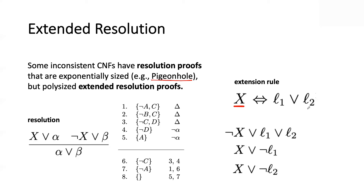Extended resolution is very simple conceptually. You pick two literals from the CNF, L1 and L2, and you make the notion of L1 or L2 equivalent to a new variable X. People have shown that for some problems with exponential proofs, if you add clauses like this — where X is a new variable not appearing in the CNF — and carefully choose L1 and L2, you can do a resolution proof that is polynomial instead of exponential. This is written as three clauses, and you're really adding these to the CNF.